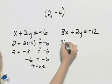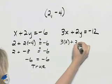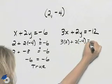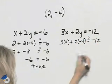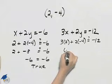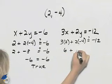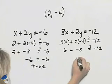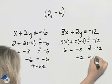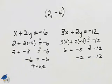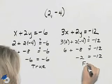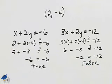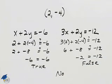In the second equation, we have three times two plus two times negative four. We want to see if that equals negative twelve. Three times two is six, and two times negative four is negative eight. Six plus negative eight is negative two, and negative two does not equal negative twelve — that is a false statement. Because we did not obtain two true statements, this point does not satisfy the system.